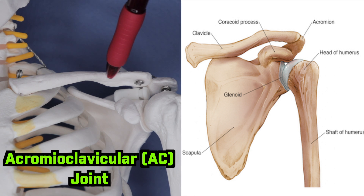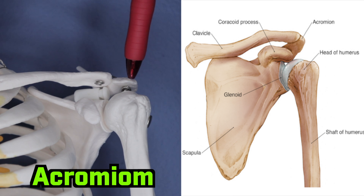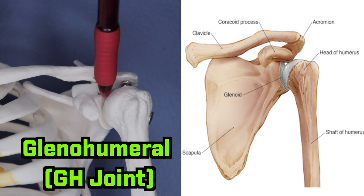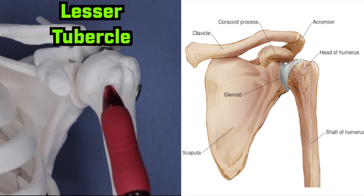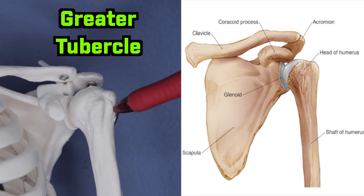As we move laterally, the clavicle articulates with the acromion to create the acromioclavicular joint. The acromion process is this bump right here on the tip of your shoulder. Inferior to the acromion, we have the head of the humerus meeting the glenoid fossa, creating the glenohumeral joint. On the humerus itself, medially we have the lesser tubercle and laterally we have the greater tubercle, which serve as attachment points for major muscles.